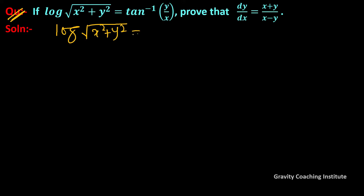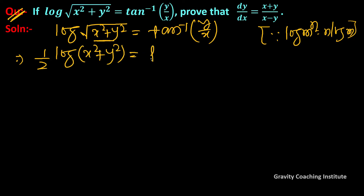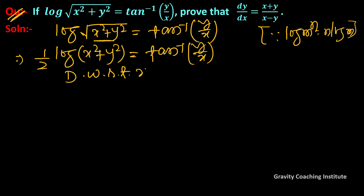इस वाले पार्ट को अगर हम power में करेंगे तो इसके power होगी 1 upon 2, और इसमें हम log की family को use कर देंगे: log m to the power n equal to n log m. तो इसको लिख सकते हैं: half log x square plus y square equal to tan inverse y upon x. Now differentiate with respect to x.